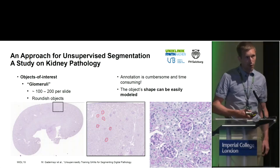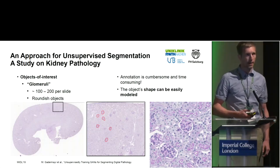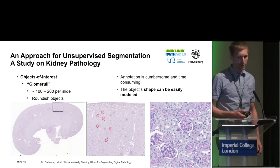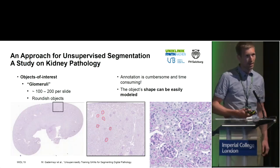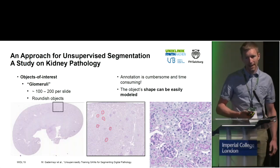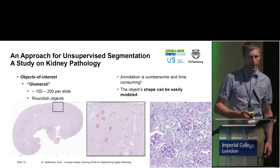So our question is: what can we do? How can we do it in an unsupervised way? Our idea was that the objects are quite easy to model — at least the shape of the objects.